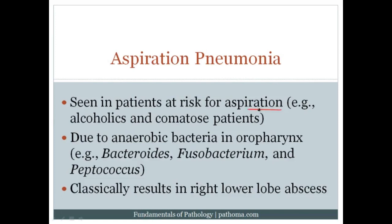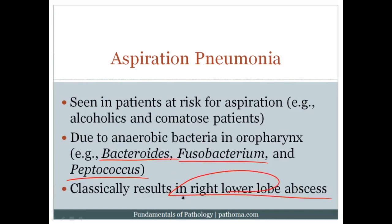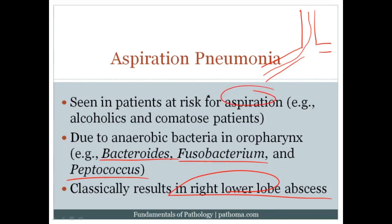Aspiration pneumonia occurs in patients at risk for aspiration, such as alcoholics or comatose patients. It is classically due to anaerobic bacteria from the oropharynx — the three high-yield bugs are Bacteroides, Fusobacterium, and Peptococcus. The classic location is the right lower lobe, which then results in an abscess. The right lower lobe is the classic location because the right main stem bronchus branches at a less acute angle than the left, making it easier for aspirated material to travel there.